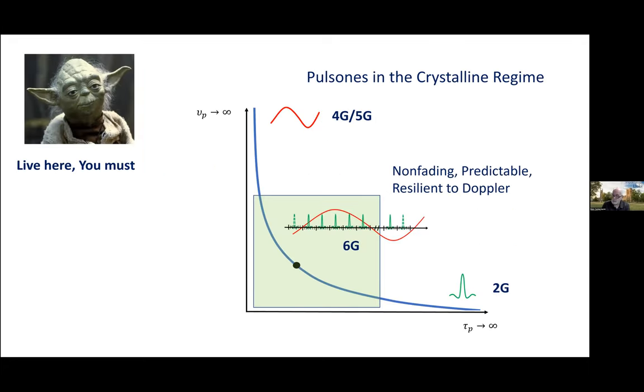And finally, a word of inspiration from a galaxy far, far away, which is, here's a graph. We show the hyperbola with 2G time domain, frequency domain, 4G, and the suggestion that pulses in the delay-Doppler domain, that is to say, pulsones are a perfect choice for 6G. To quote the little green man, Thank you, everyone, and live here, you must. Thank you for your time.